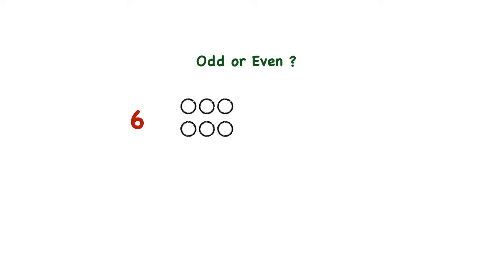Now, if I want to draw a line to match each pair of circles, I'll do something like this. And you'll notice that every circle is part of a pair. That's why we say that six is an even number, because every object is part of a pair with an even number.